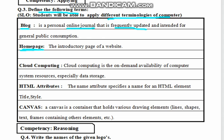Next is cloud computing. Cloud computing is the on-demand availability of computer system resources, especially data storage. When our computer storage capacity is exceeded, we use cloud computing for available storage and processing.